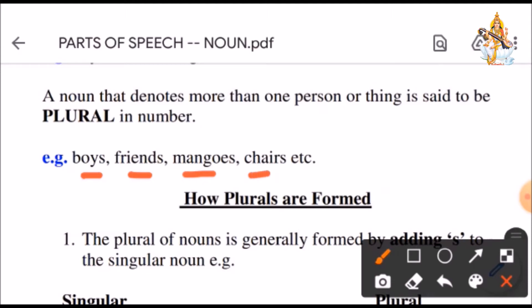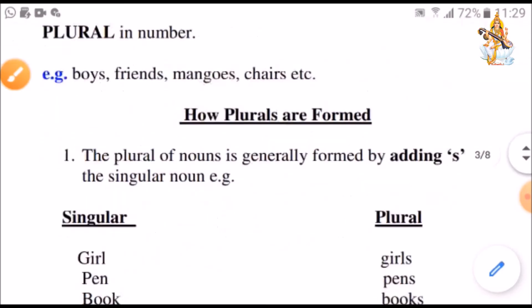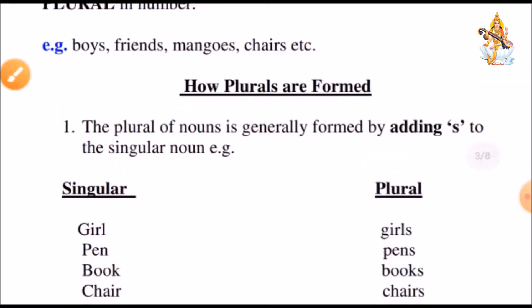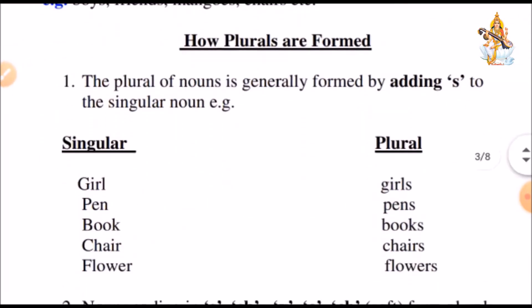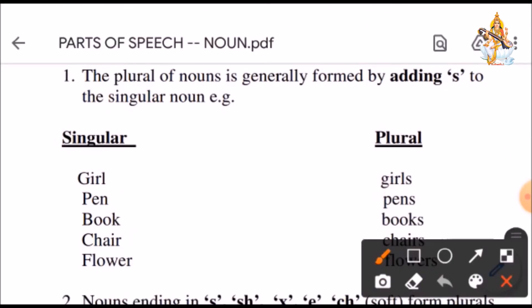Here, boys, they can be two or more in number. Friends can be two or more in number. Now, let's see how plurals are formed. It is very easy to form plurals. The plural of nouns is generally formed by adding S. This is, in general, when we make a plural, we add S to the singular noun. See the examples.